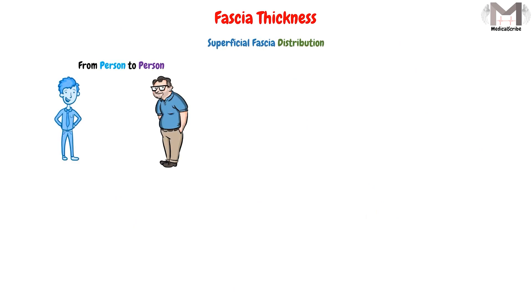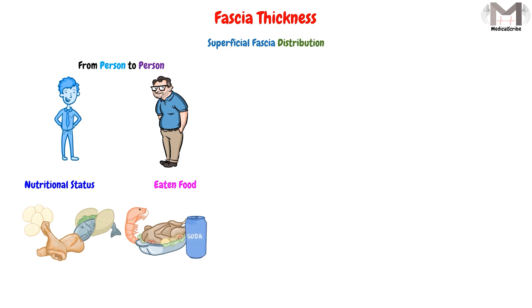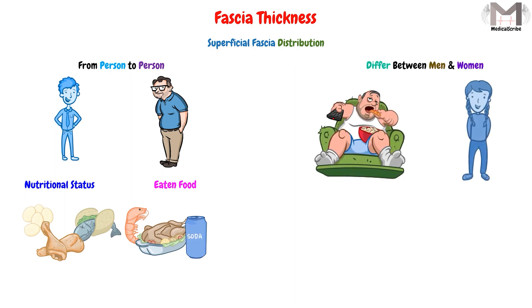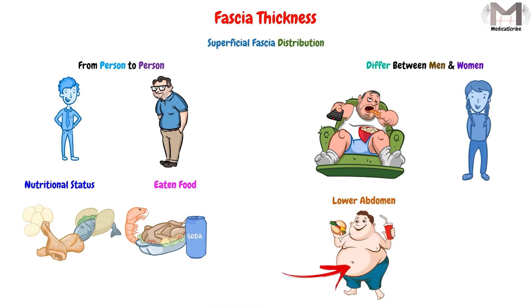The distribution of superficial fascia also differs from person to person according to nutritional status and diet. Lastly, it differs between men and women: in men, subcutaneous tissue accumulates mostly in the lower abdomen, while in women it accumulates mostly in the breasts and thighs.